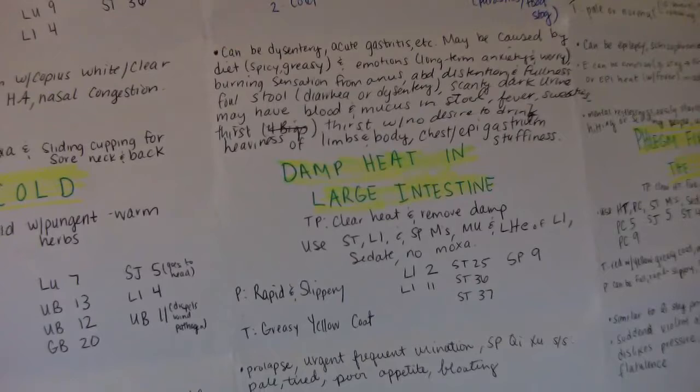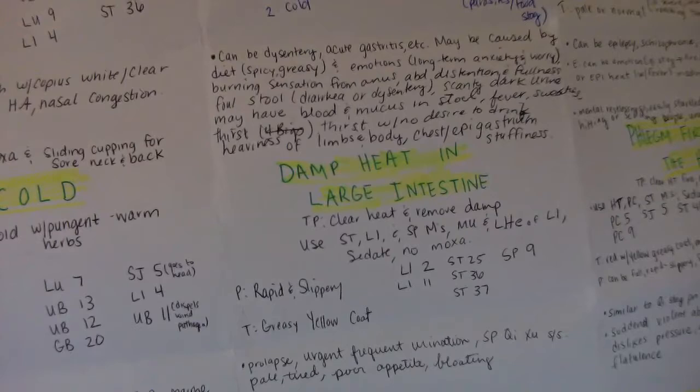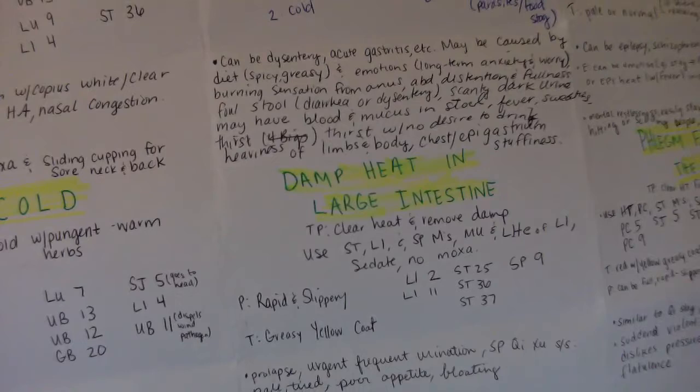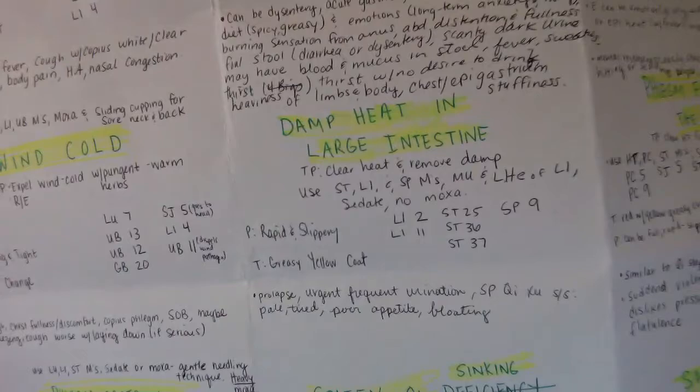Damp heat in the large intestine points combination: Large intestine 2, large intestine 11, stomach 25, 36, 37, and spleen 9.